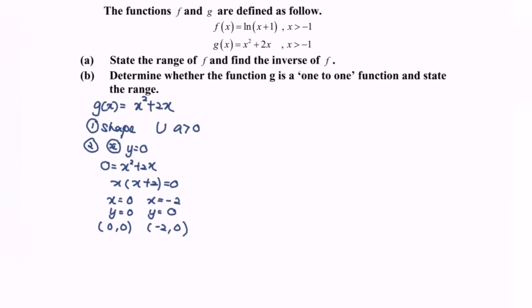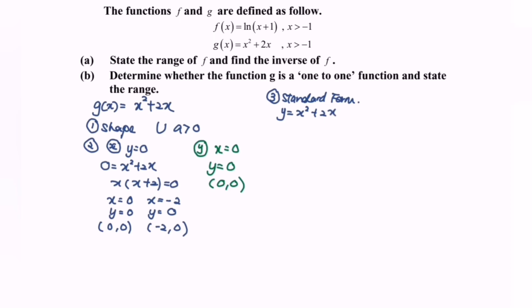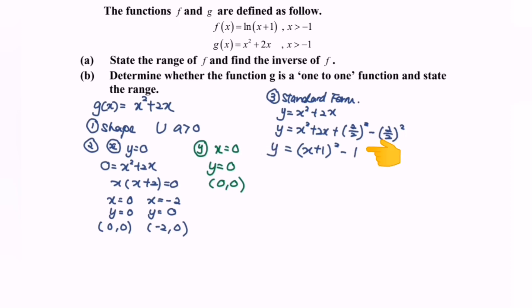For the y-intercept, when x equals 0, y equals 0, so the graph passes through the origin. The third step is to find the standard form by completing the square: y equals x squared plus 2x plus (2/2) squared minus (2/2) squared, which gives y equals (x + 1) squared minus 1. From this, the minimum point is at (negative 1, negative 1).